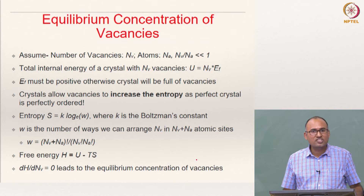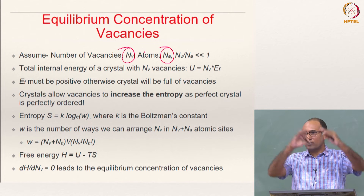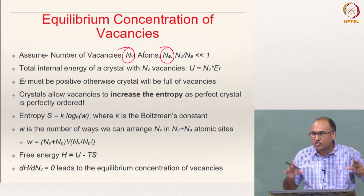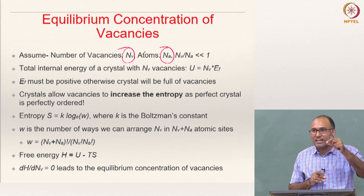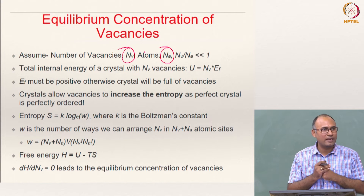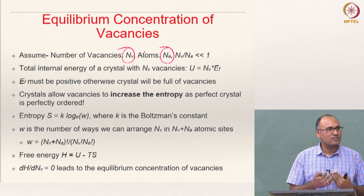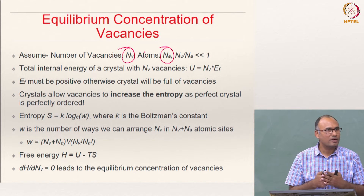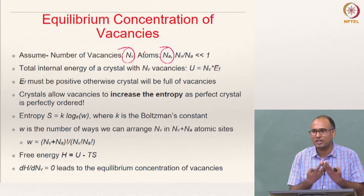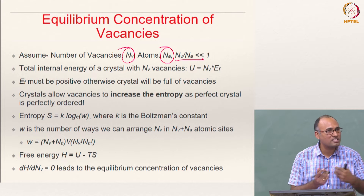Let us assume there are Nv vacancies and Na atoms in the crystal lattice, giving a total of Na + Nv lattice positions. Out of these, Na sites are occupied by atoms and Nv sites are vacant. We assume that the number of vacancies is much smaller than the number of atoms — that is, Nv / Na must be much less than 1.